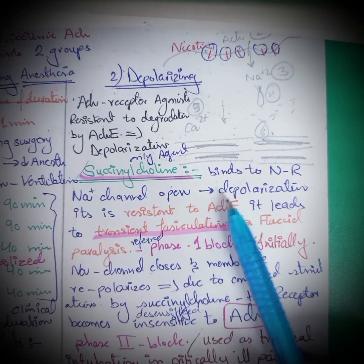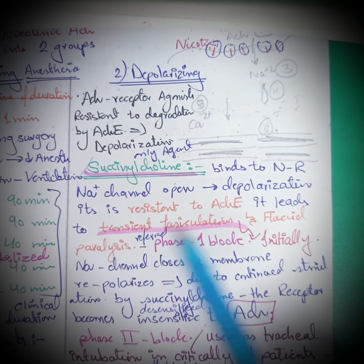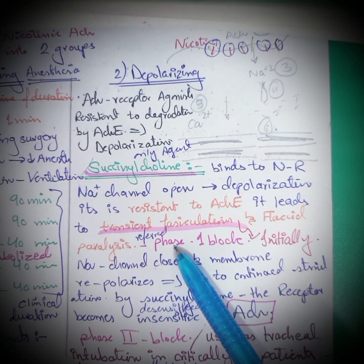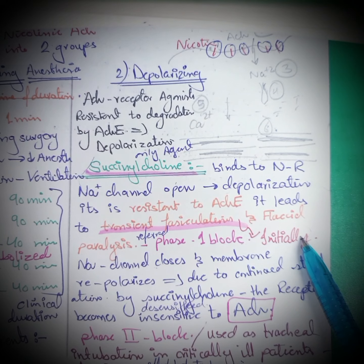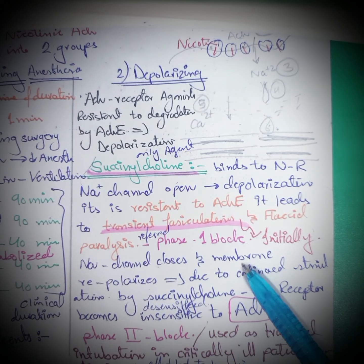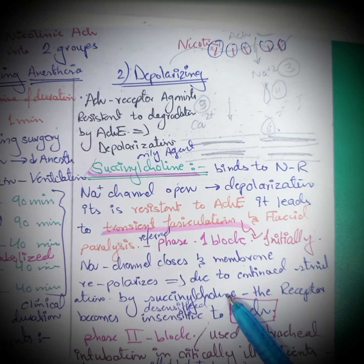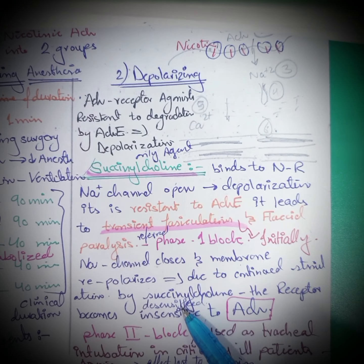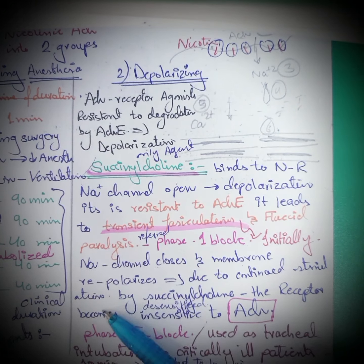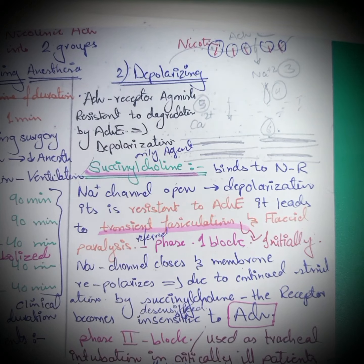Succinylcholine binds to the nicotinic receptor, the sodium channel opens, and depolarization takes place. Because it is resistant to degradation, it leads to transient fasciculations and flaccid paralysis — this is Phase 1 block. In Phase 2 block, the sodium channel closes and the membrane repolarizes; however, the continuous stimulation by succinylcholine causes desensitization to acetylcholine, resulting in the Phase 2 block.